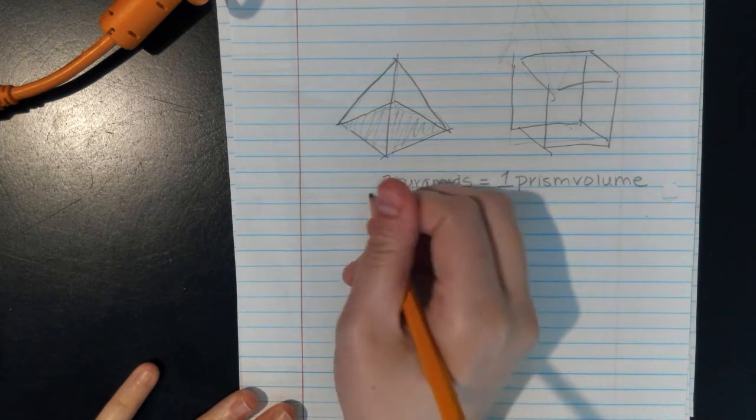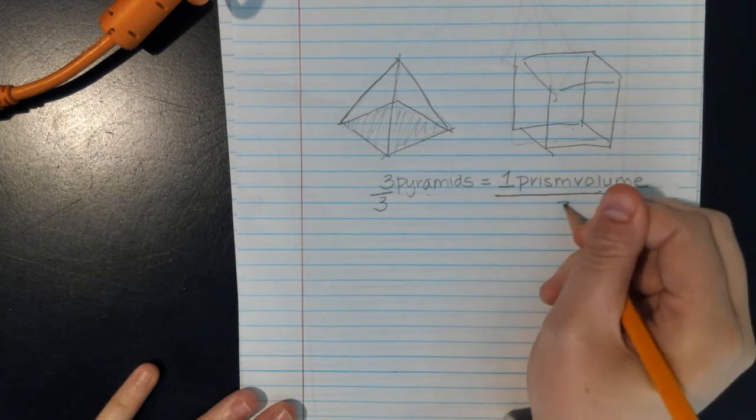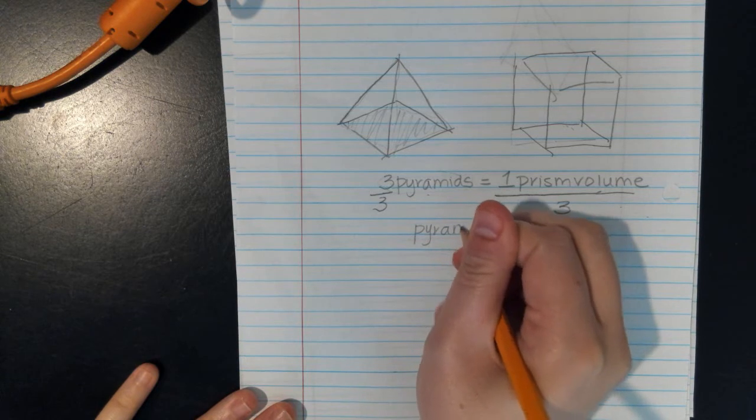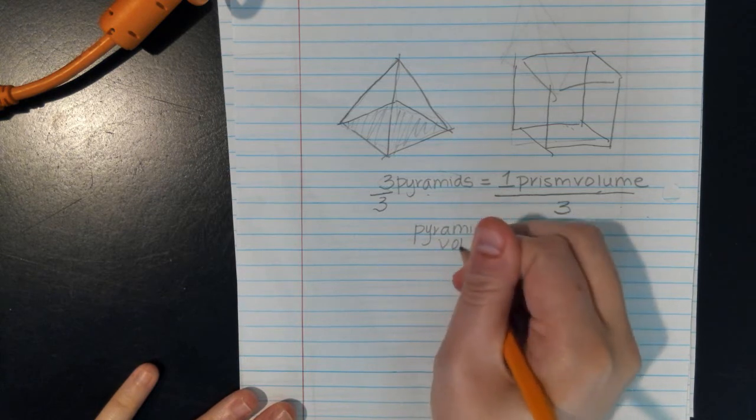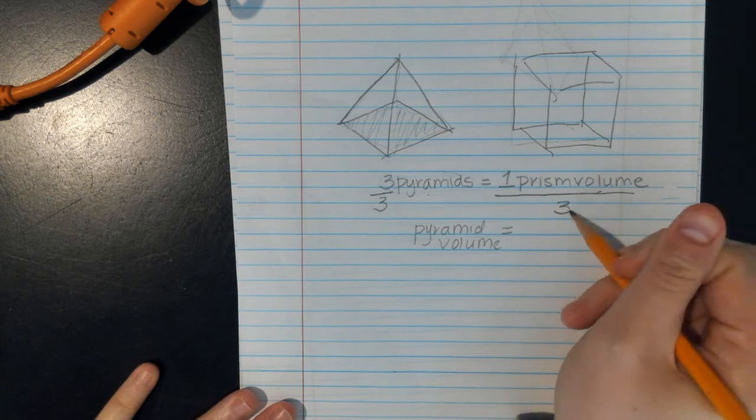Yeah, I can divide it by three. So if I divide both sides by three, I'm going to get the pyramid volume is equal to a prism volume divided by three.